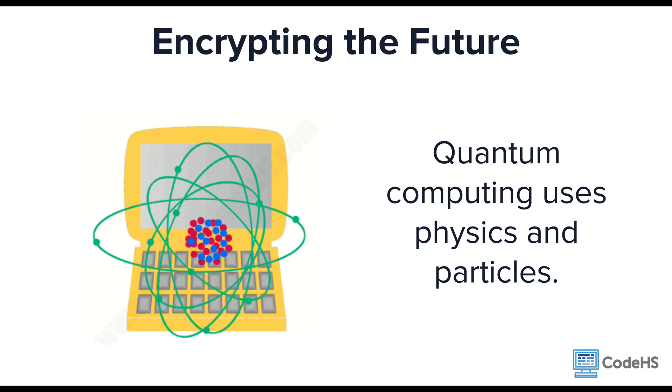Cryptologists are already starting to work with encryption techniques that use quantum computing. Instead of using mathematical algorithms, a quantum computer encodes information in particles, like photons and electrons. Quantum mechanics allows particles to be more than just on or off, or one or zero.